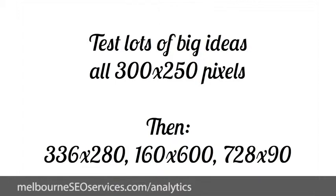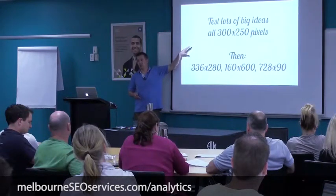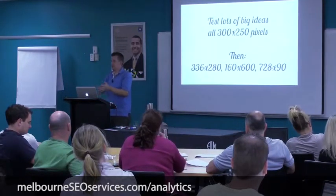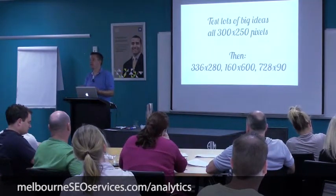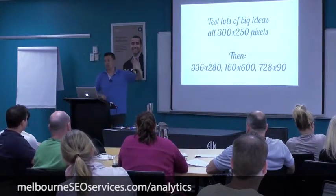I would always start with a 300x250 ad. We found the next best three to be those three on the screen: 336x280, 160x600, and 728x90. What I'm going to suggest though is that you start with 10 300x250 ads — forget the other sizes for now. Job one is to figure out which ads resonate the most with your market, which ads make you the most money. Then we can go and build the other sizes.